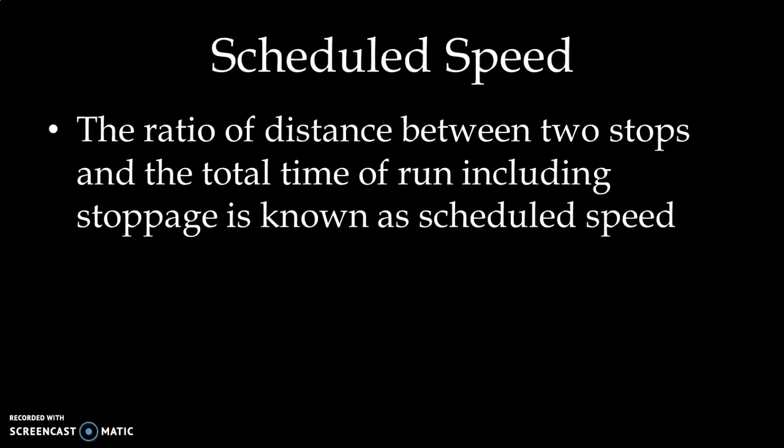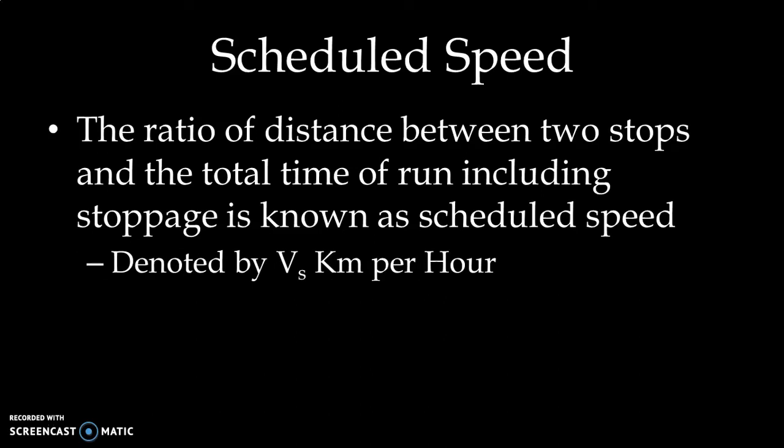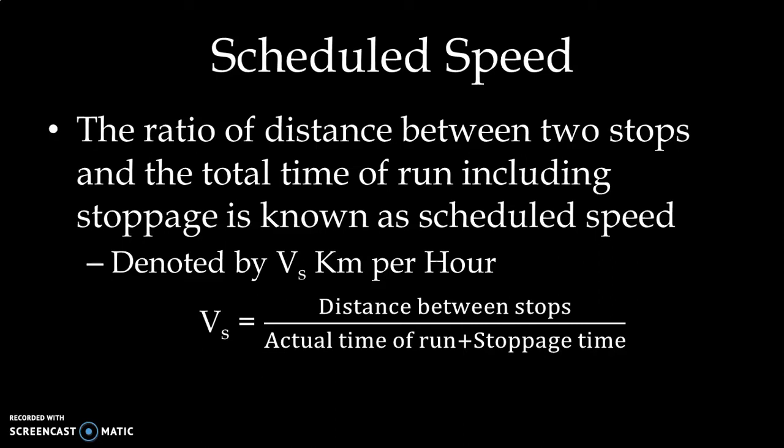The ratio of distance between the two stops and the total time of run including stoppage is the scheduled speed. It is denoted by v with suffix s for scheduled speed and it is measured in km per hour. Mathematically it can be written as the ratio of distance between stops divided by actual time of run plus stoppage time.